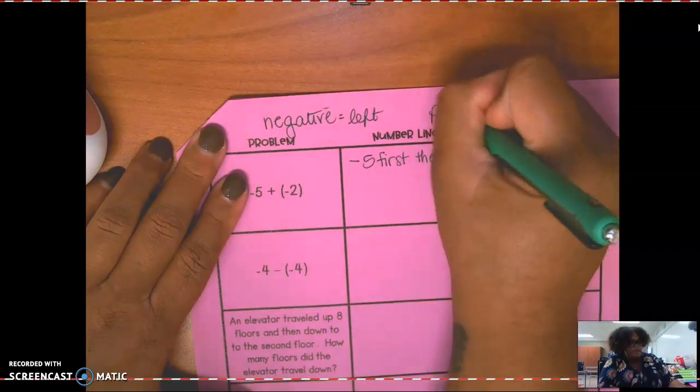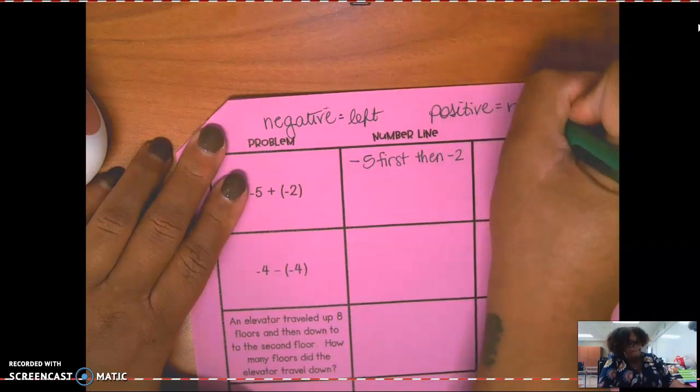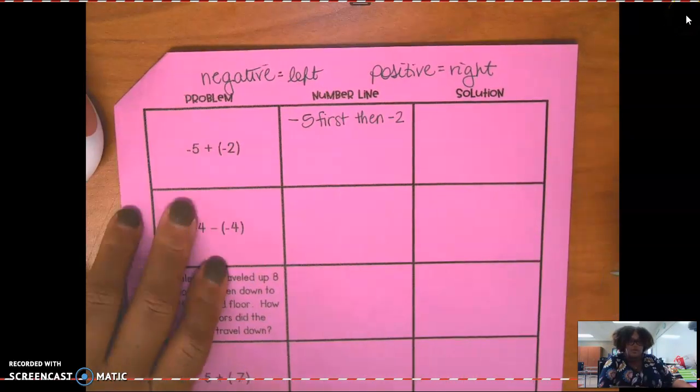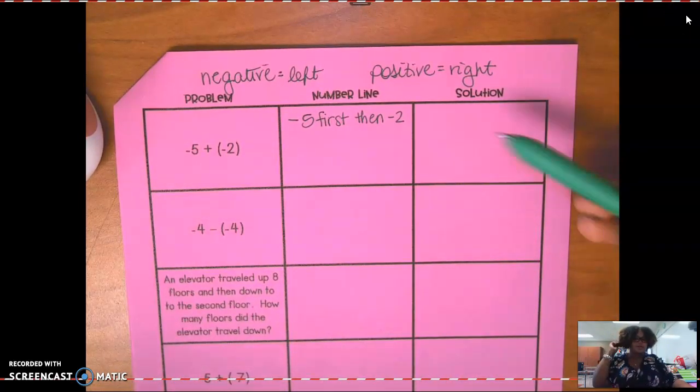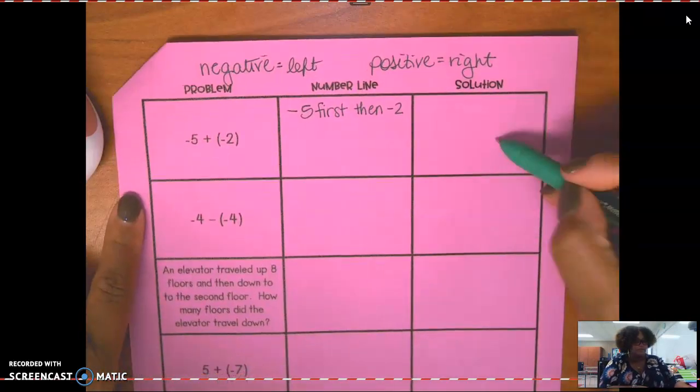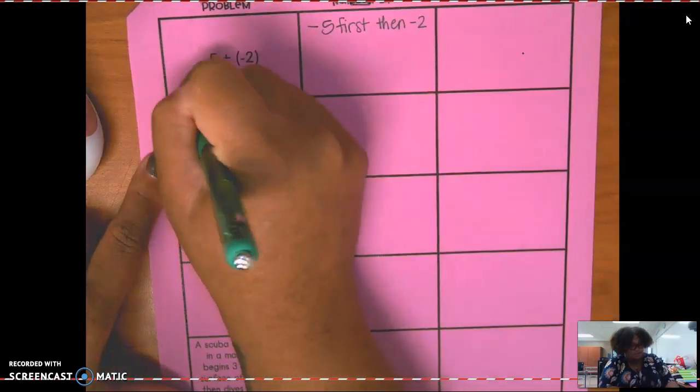And positive is right on a number line. Those are the directions that you move, and those are actually where the numbers are placed. The positive numbers are placed on the right side of the zero on a number line, and the negative numbers are placed on the left side of the zero. Your solution will come over here. Over here. Don't forget to keep change change.